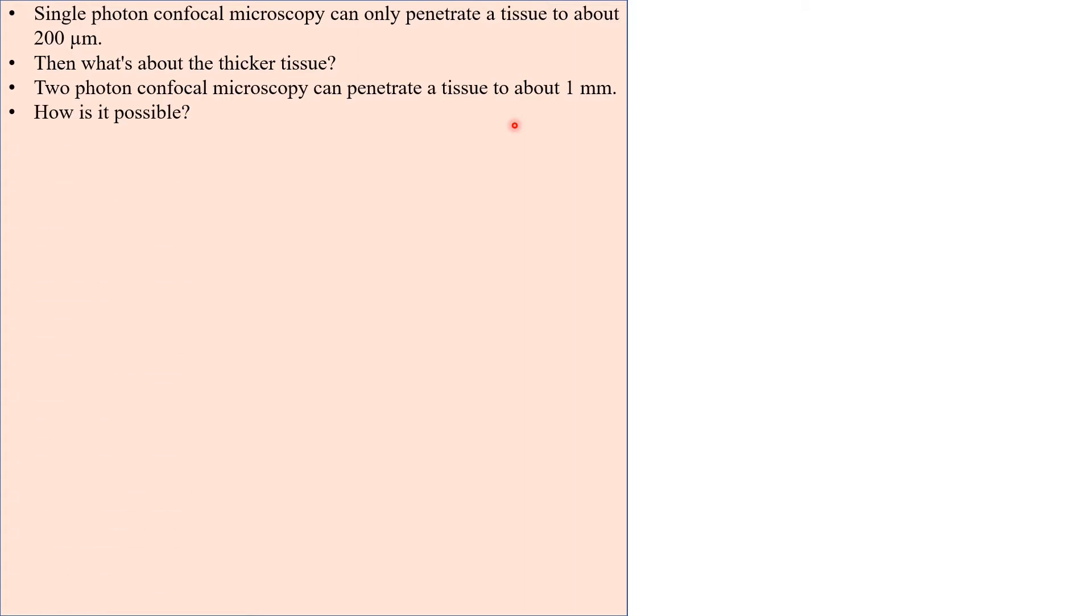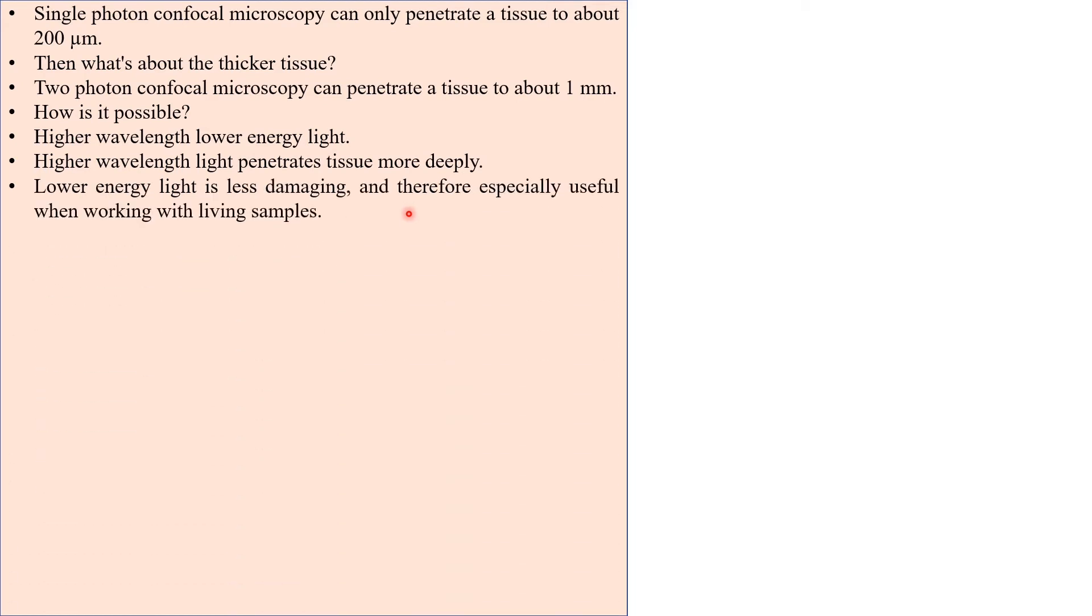But how is it possible? Two photon microscopy uses higher wavelength and lower energy light. Higher wavelength light penetrates tissue more deeply. Lower energy light is less damaging and therefore especially useful when working with living samples.